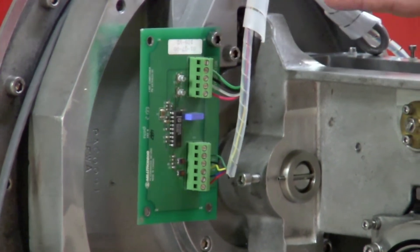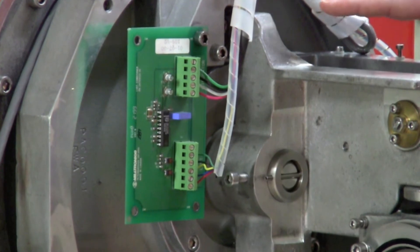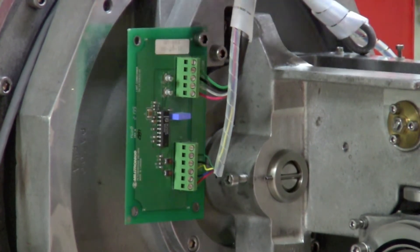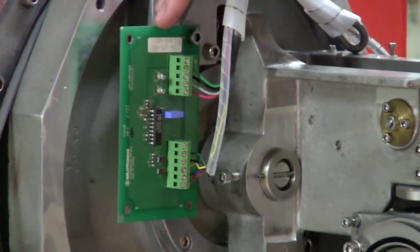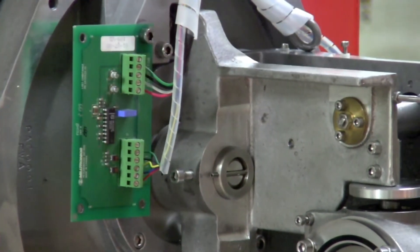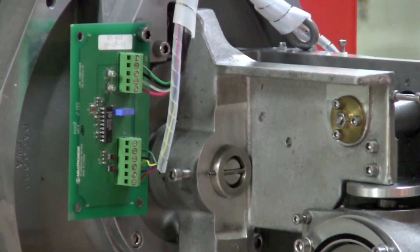Please note, when making these connections, it is important to pay attention to the color codes between the conditioner card and the LVDT. But when wiring from the conditioner card to the integrator, you just must stay consistent.